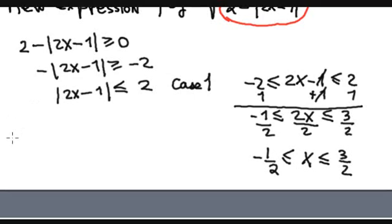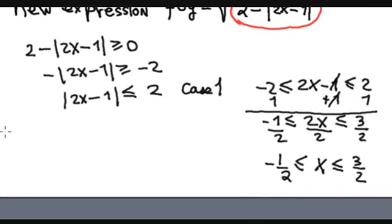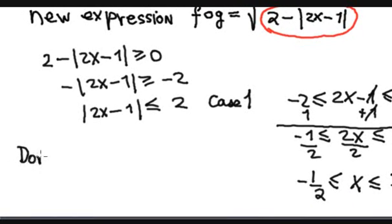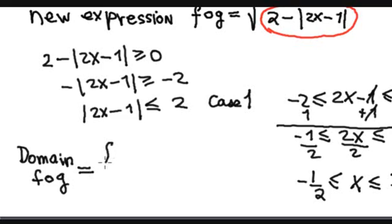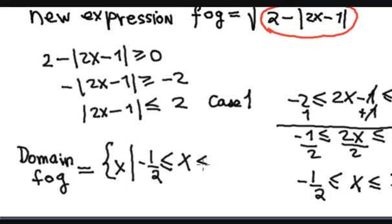Conclusion: the domain of the composite function f∘g is x such that x is in the interval [-1/2, 3/2]. This is the answer, corresponding to the matching option in the handout.